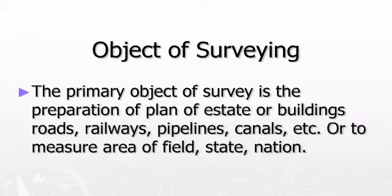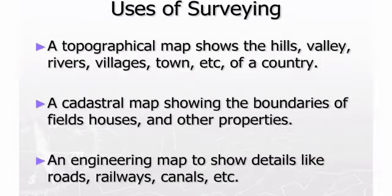The primary object of surveying is the preparation of plans for estates or buildings, roads, railways, pipelines, and canals, or to measure the area of fields, estates, and nations. Uses of surveying include: a topographical map showing hills, valleys, rivers, villages, and towns of a country; a cadastral map showing the boundaries of fields, houses, and other properties; and an engineering map showing details like roads, railways, and canals.